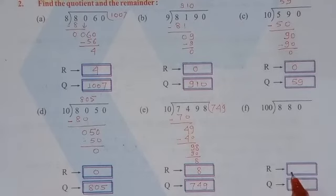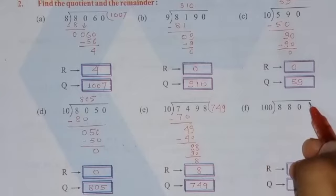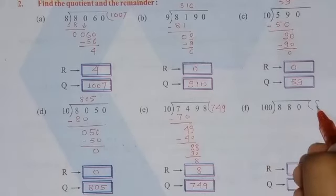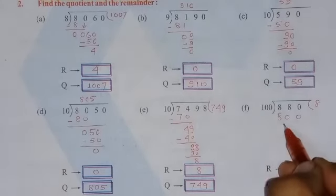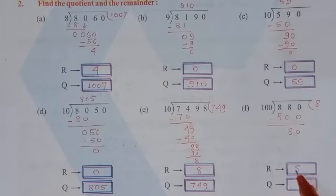The last question of this worksheet, that we have to divide 880 by 100. So as you all know that 100 8's are 800. The remainder will be 80. So remainder is 80 and quotient is 8.